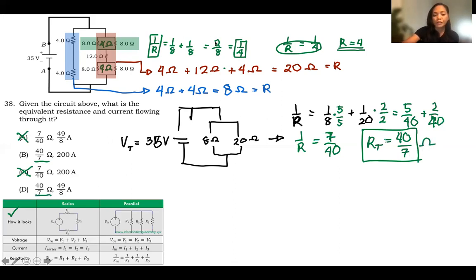We will be using Ohm's law. Ohm's law formula states that V is equal to IR. Therefore, if you're looking for I, you can just divide V over R. So let's compute for the current. Our V here is given 35 volts. And our resistance, we've computed that 40 over 7 ohms.